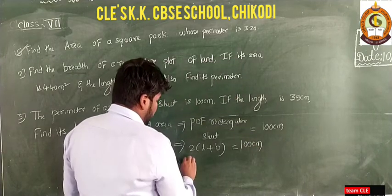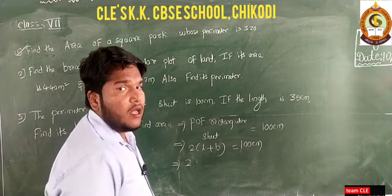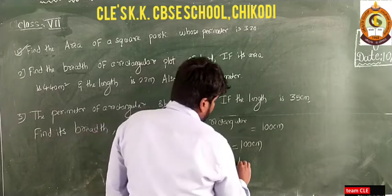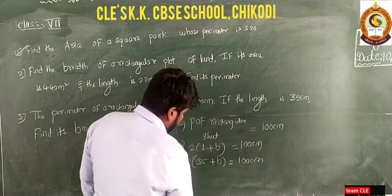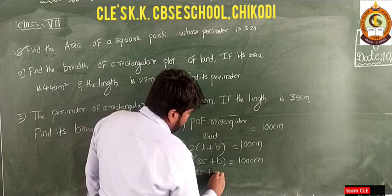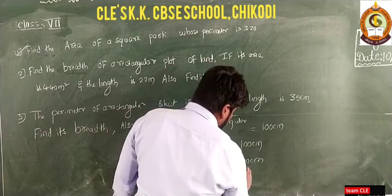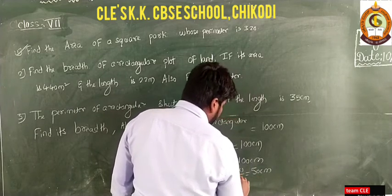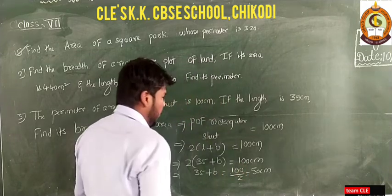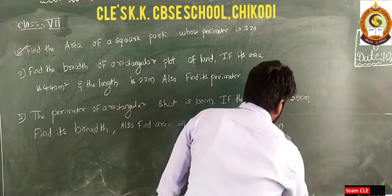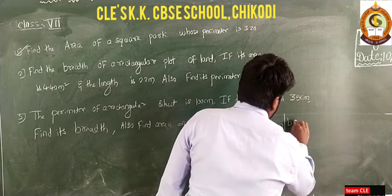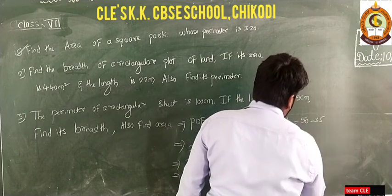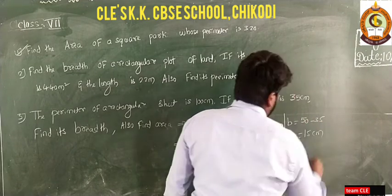Now, L is given as 35 centimeters. So two into 35 plus B equals 100 centimeters, which gives 35 plus B equals 100 divided by 2, that is 50 centimeters. Therefore B equals 50 minus 35, so B equals 15 centimeters.